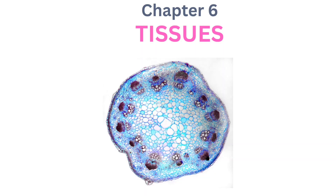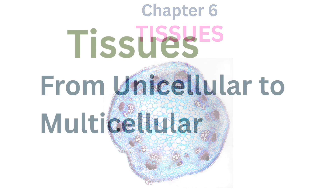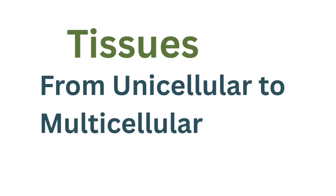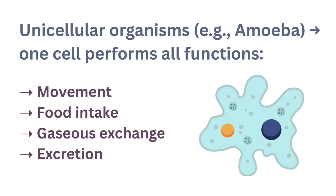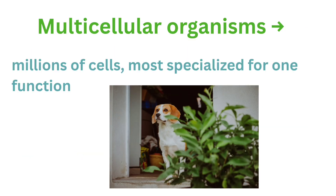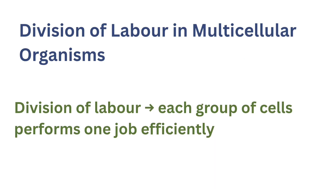Every living body is made up of cells, but when millions of cells are present together, how do they organize themselves? That is what we will explore in this chapter. In unicellular organisms like amoeba, just a single cell does everything — moving, eating, breathing, even excretion. But in multicellular organisms things are different; with millions of cells, most are specialists, each designed for a specific task, and this system is called the division of labor.